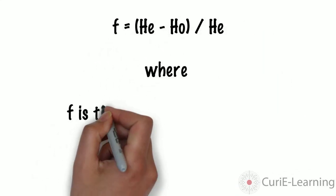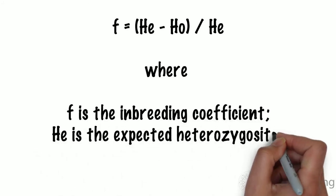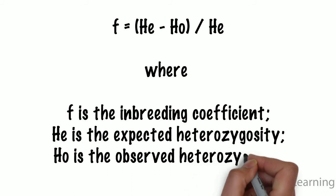We can calculate the inbreeding coefficient by subtracting the observed heterozygosity from the expected heterozygosity and dividing that number by the expected heterozygosity.